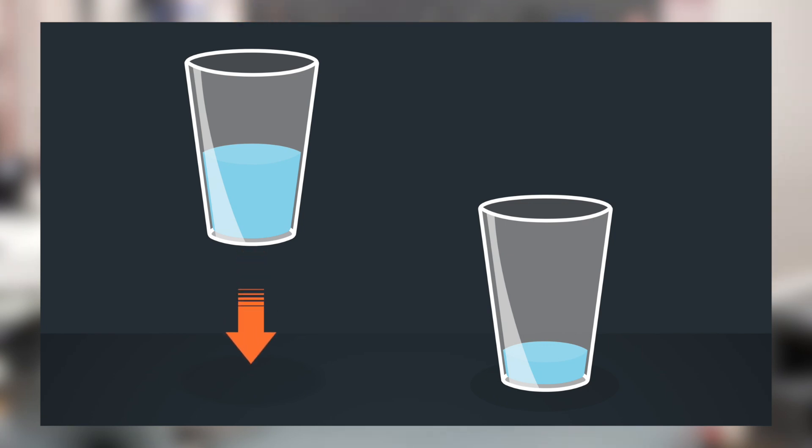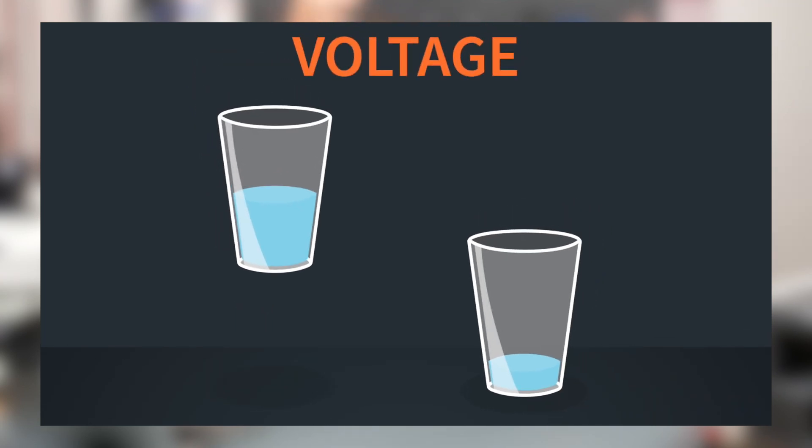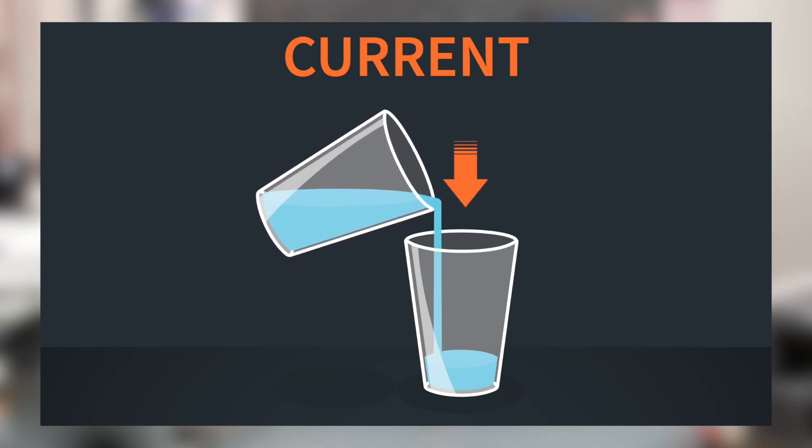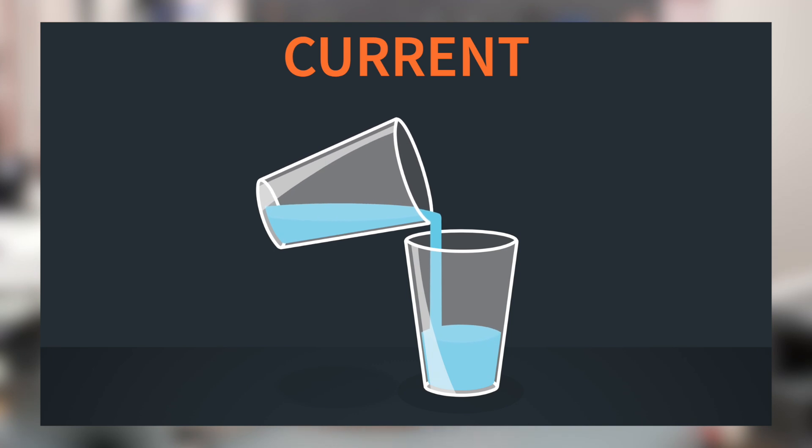If you have water up here and water down here, the water up here wants to flow down here. But if you have a cup of water up here and it's not flowing down, you don't have any flow, but it's still at that higher potential. So that's voltage — that desire, that potential for this to move down to here. Now current, using that water analogy, would be if I were to tip the glass — that flow of water, that flow of electrons, that movement of electrons — that would be current. When you have a circuit, you have a voltage across something and a current through things.